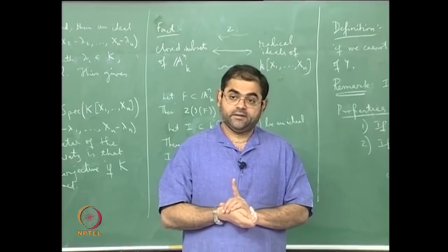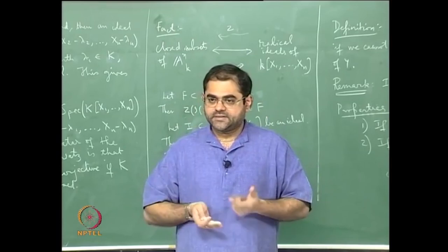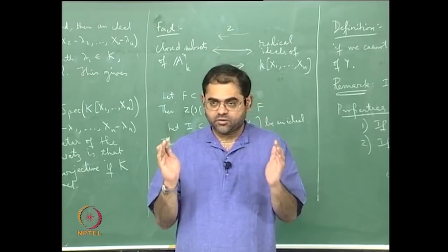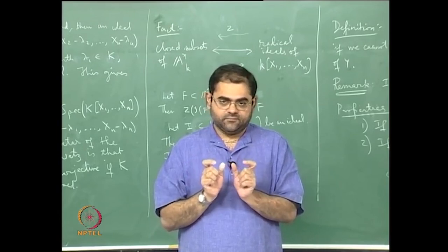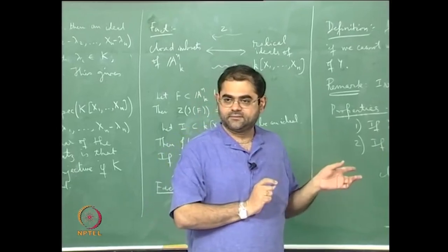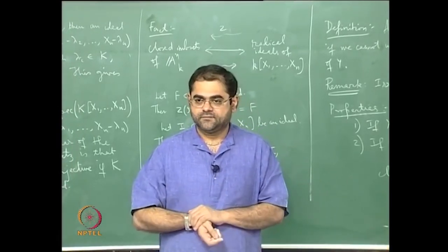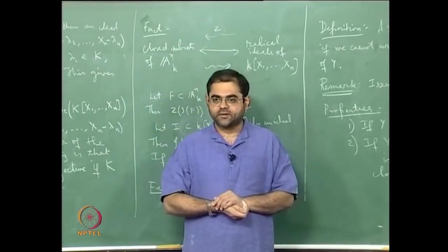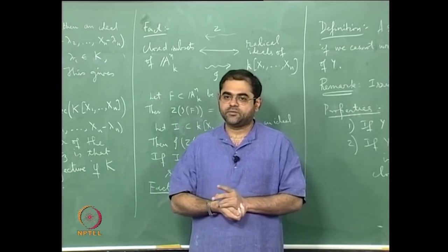In an irreducible space, the open sets are huge. On the real line you can find two small disjoint open sub-intervals, but in an irreducible topological space any two open subsets will intersect — you cannot make them very small. This seems like a disadvantage, but the amazing fact about algebraic geometry is that even with this much information you can do all the geometry you want.